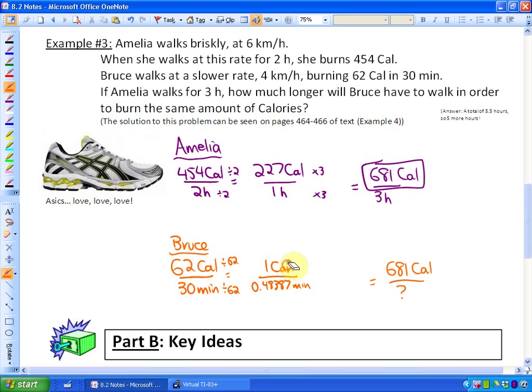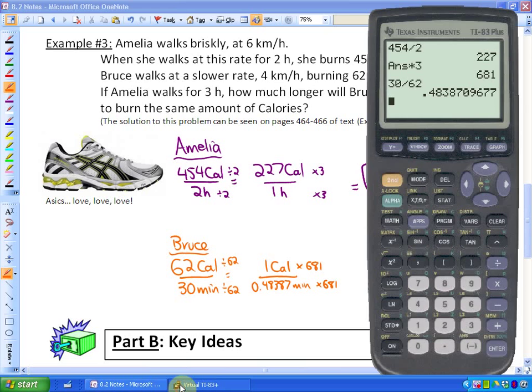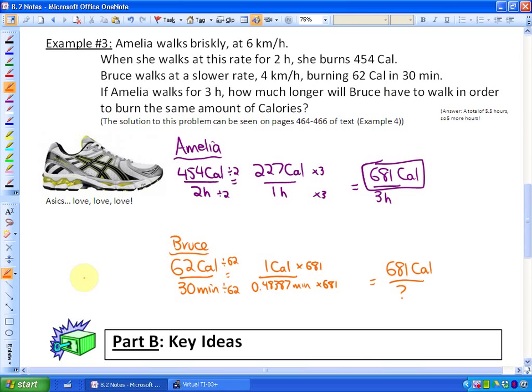So what I can do now is figure out how long it takes him. If I multiply that by 681, how long it takes him to burn 681 calories. So times by 681, it would take him 330, let's round it to 330. 330 minutes to burn 681 calories.